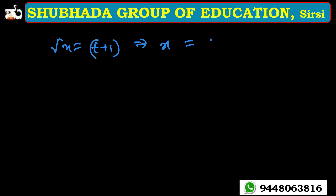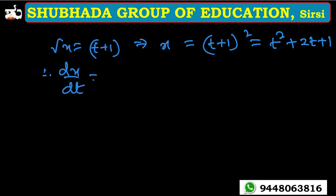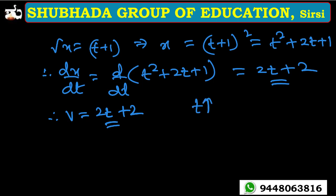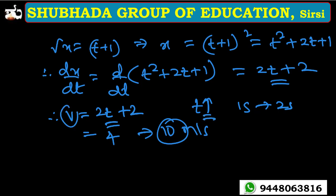Squaring both sides: x = (t+1)² = t² + 2t + 1. Differentiating: dx/dt = 2t + 2. So velocity equals 2t + 2. Therefore, as time increases, velocity increases. Option A is the right answer.